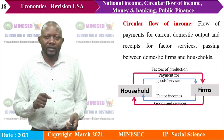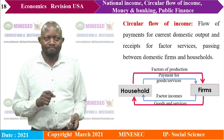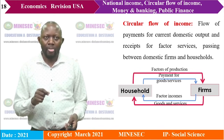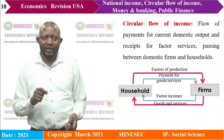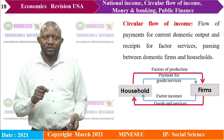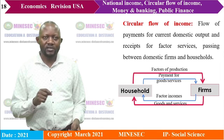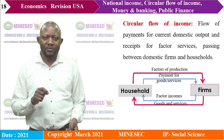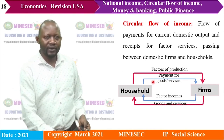The circular flow of income is the flow of payment for current domestic output and receipts for factor services, passing between domestic firms and households. Looking at the diagram, we have households and firms. Factors of production — land, labour, capital, and enterprise — are provided by households to firms.